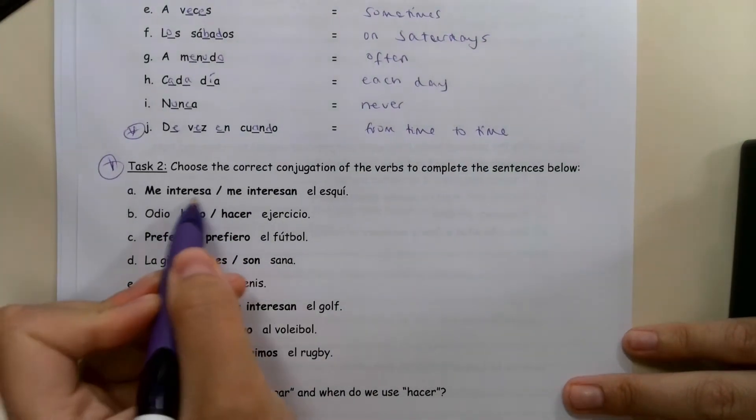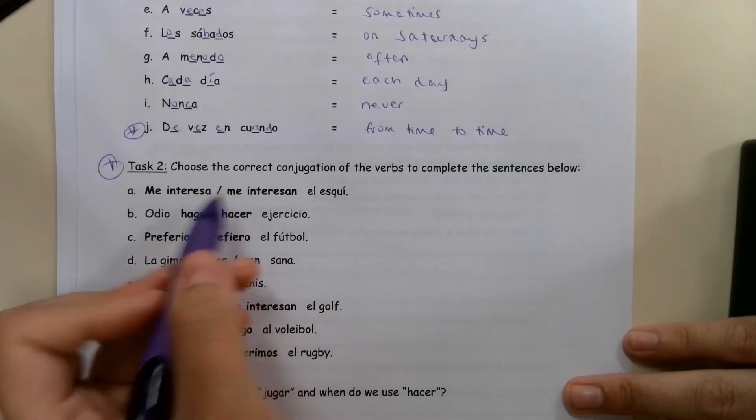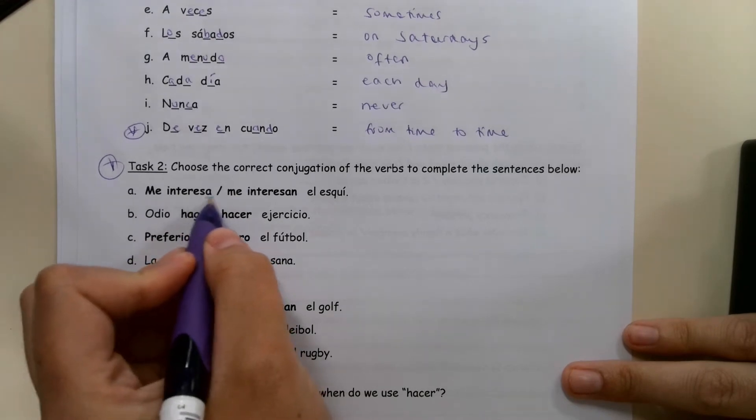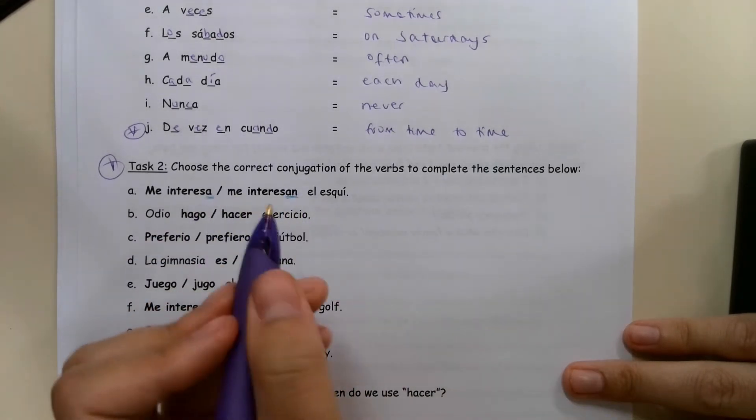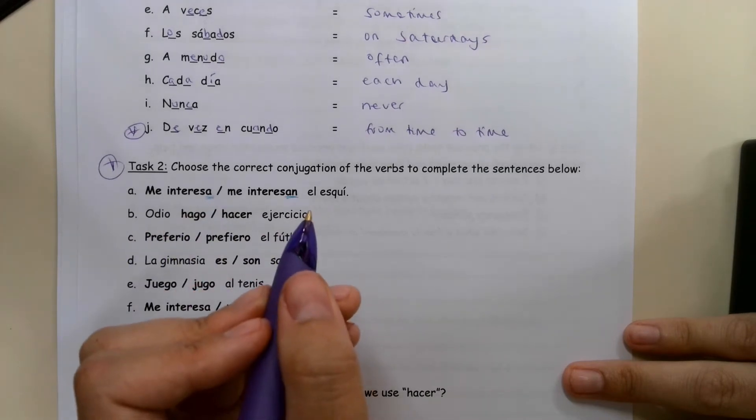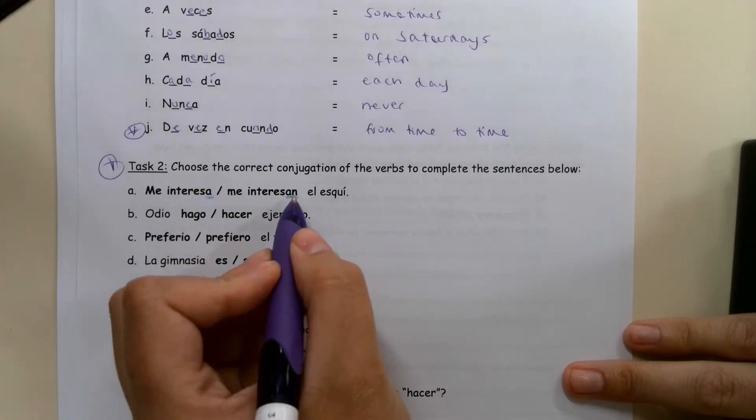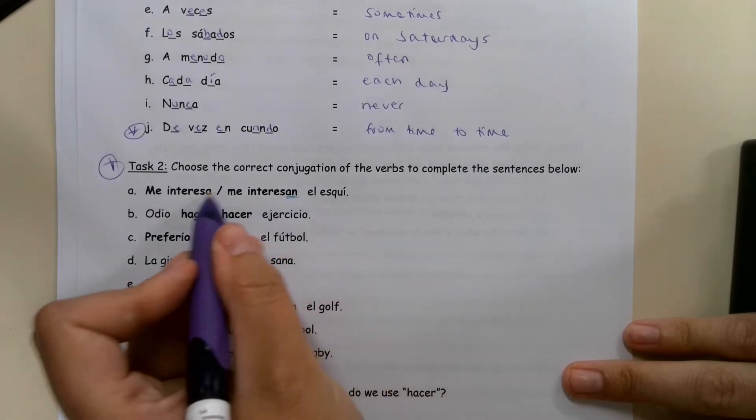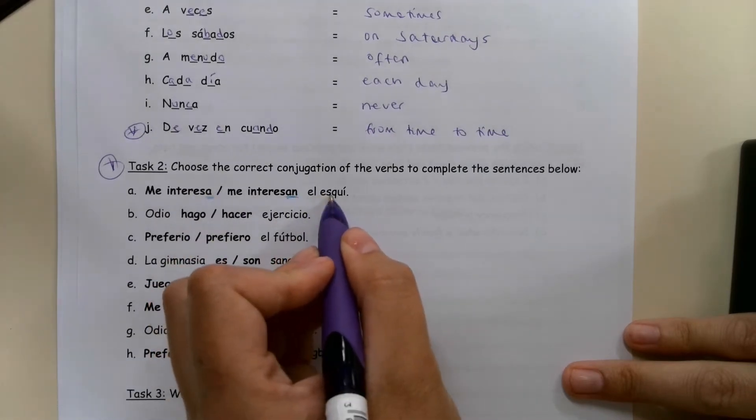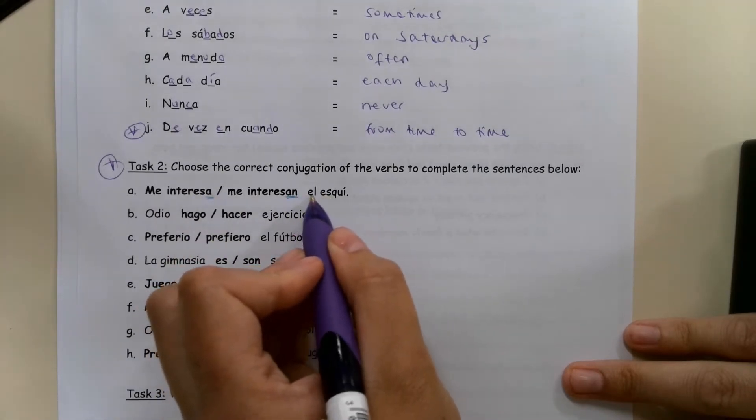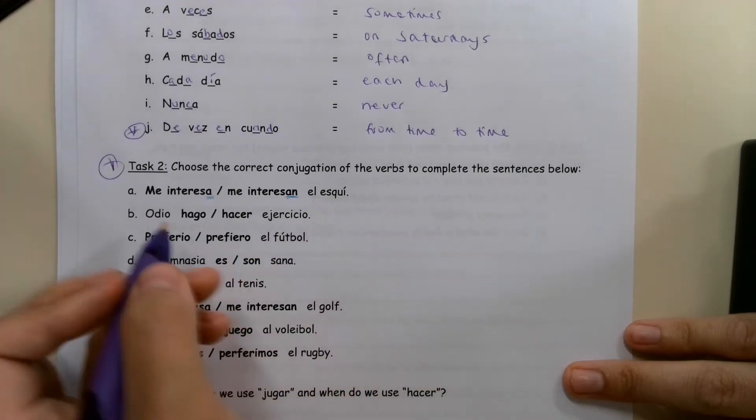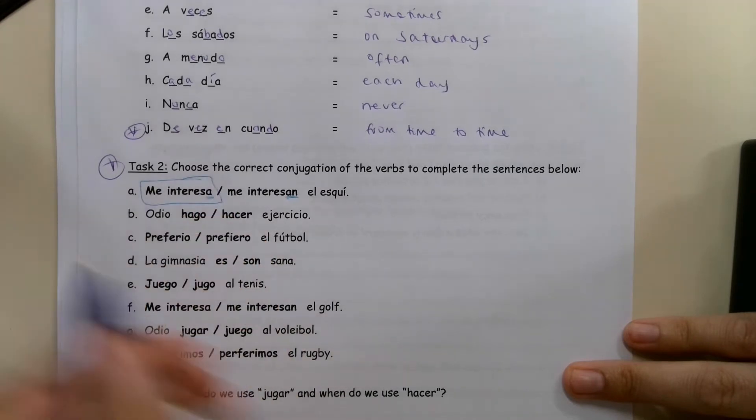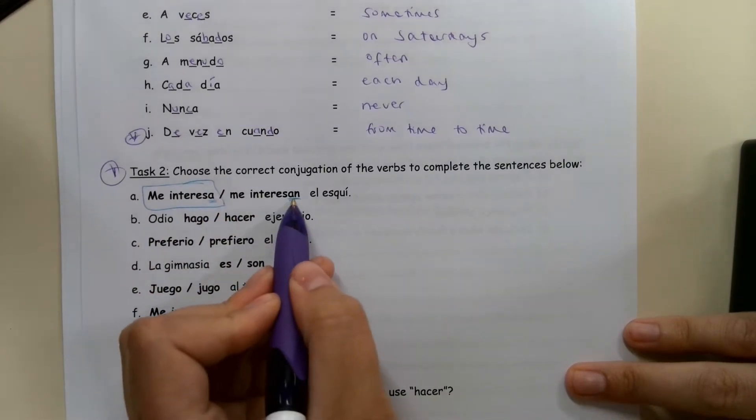So the two options that we've got here, we're going to look at when we might use each of those. So for A, me interesa or me interesan? This works exactly the same as me gusta, me gustan. We know that we need the N when we're talking about more than one thing. So the thing here that we've got is el esqui. That's only one thing. It's el, which is singular, and we've not said anything else. So we only need this one because this is for something that's plural.